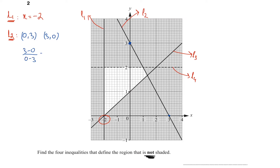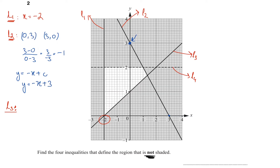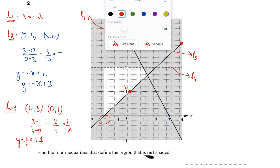For line three, I take the points (4, 3) and (0, 1). The gradient = (3−1)/(4−0) = 2/4 = 1/2. The y-intercept read from the graph is 1, so the equation is y = (1/2)x + 1. For line four, it's a horizontal line cutting the y-axis at 2, so the equation is y = 2.